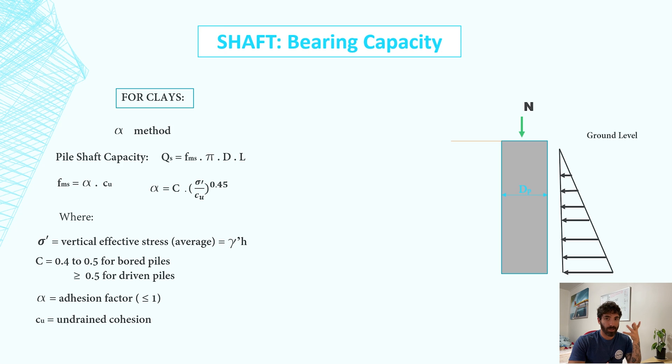But there's a limit for that. The limit for α is 1, and the coefficient varies from 0.4 to 0.5 for bored piles and equal or greater than 0.5 for driven piles. Now if you have cohesionless soil like sand, you can use the beta formula, which is again the skin friction times the surface area, which is π times D times L.